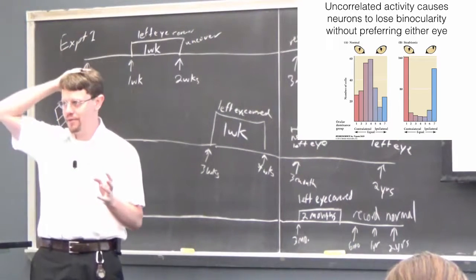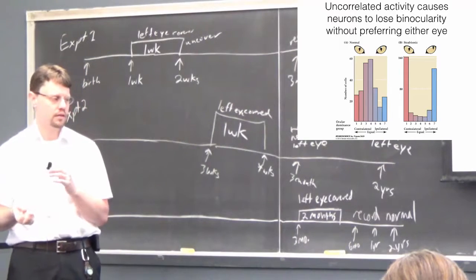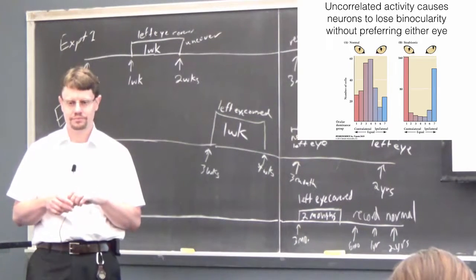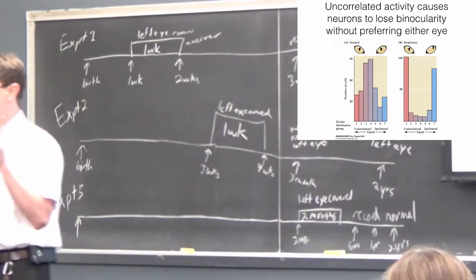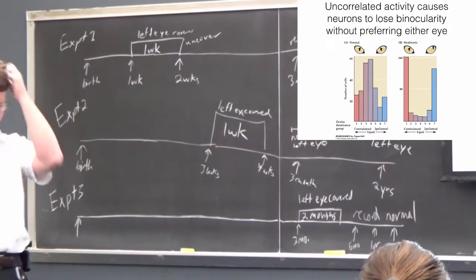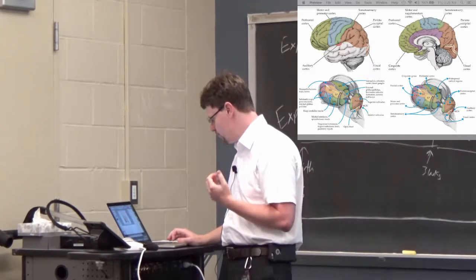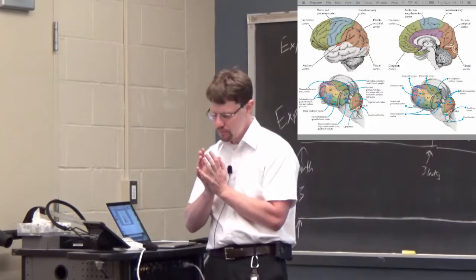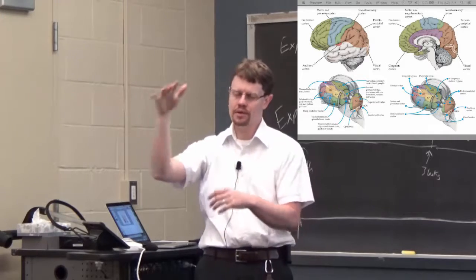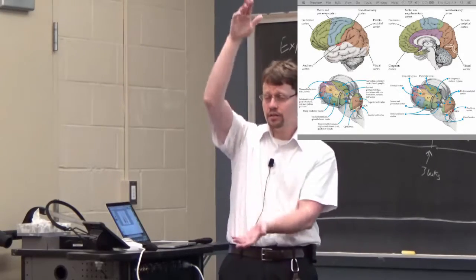Sometimes you still see critical period written even by neurophysiologists who know it's not quite right — when communicating with each other they'll use it without specifying it's really a sensitive period. It can be confusing when coming to this for the first time and seeing critical period thrown around when the proper term would really be sensitive period. So any questions about the idea of monocular deprivation versus strabismus, or critical versus sensitive periods?